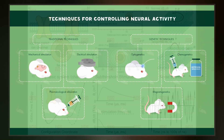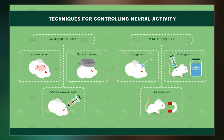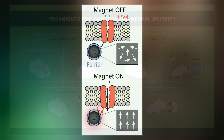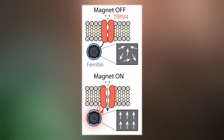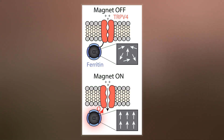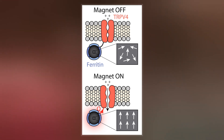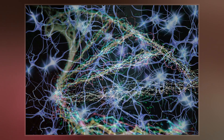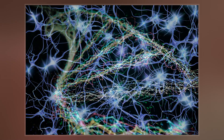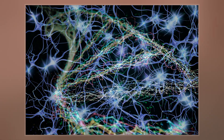As such, magnetogenetics is a cellular modulation method that uses a combination of techniques from magnetism and genetics to control activities of individual cells in living tissue, even within freely moving animals. This technique is comparable to optogenetics, which is the manipulation of cell behavior using light.